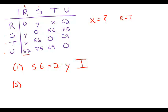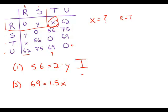Statement number two says that by the most direct route, the distance between T and U is 1.5 times the distance between R and T. The distance between T and U is 69, and that equals 1.5 times X, the distance between R and T. So that allows us to solve for X. That statement is sufficient.